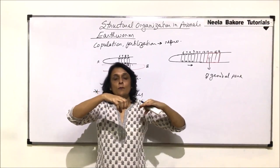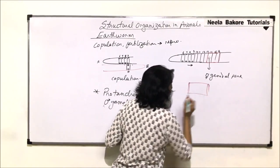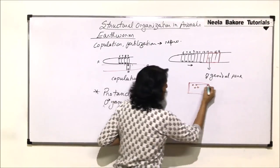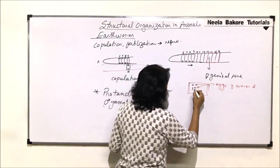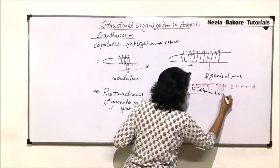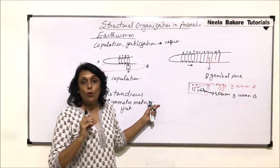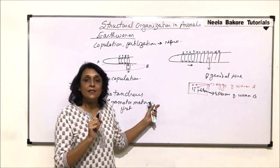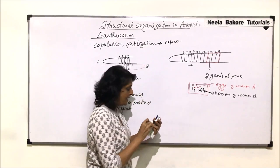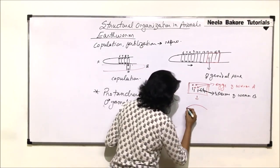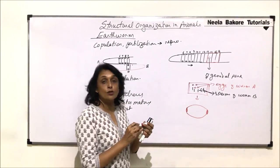Now in this space there are eggs of worm A and sperms released from the spermathecal pores of worm B. The worm completely retracts from the clitellum. What remains is the cocoon-like clitellum region containing both eggs and sperms. This is cross fertilization — though the worm is hermaphrodite, one gamete comes from one worm and the other from the other worm. The clitellum closes its two openings to form a cocoon structure.